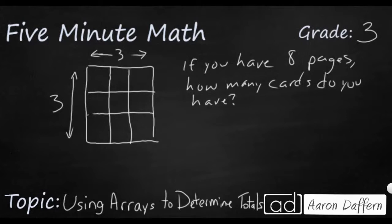You're not going to see all eight pages—only this one page. So you can use this array to first figure out the total on this first page. If you want, you could write out every single number: one, two, three, four, five, six, seven, eight, nine. Or you could just skip count: three, six, nine. So you've got one page with nine cards.